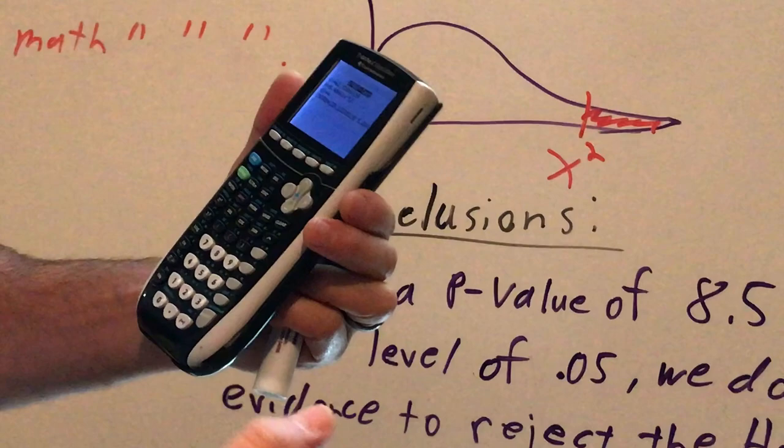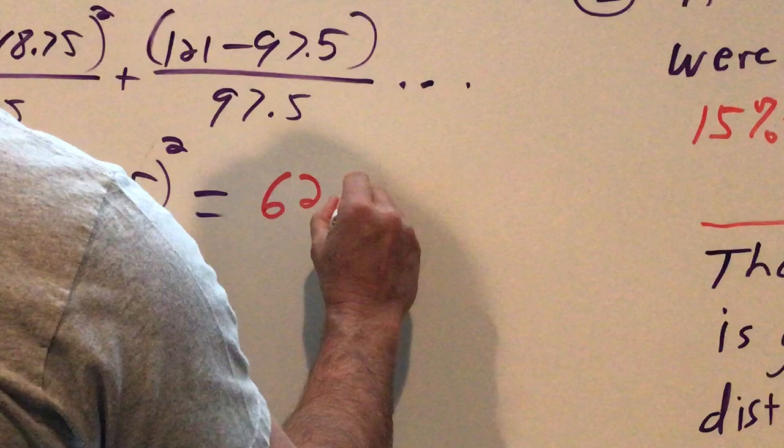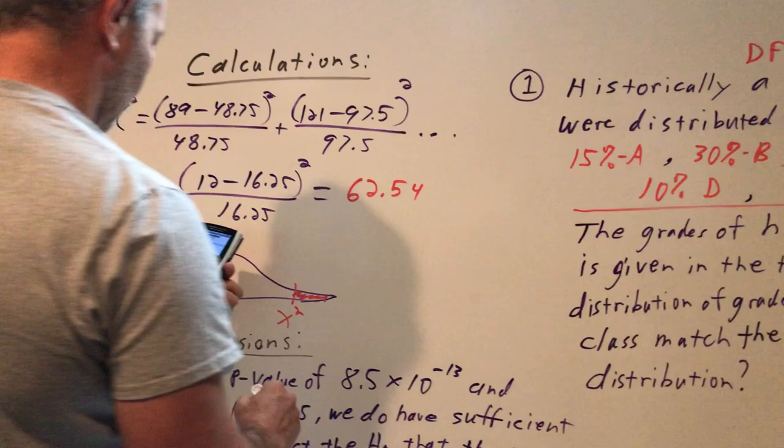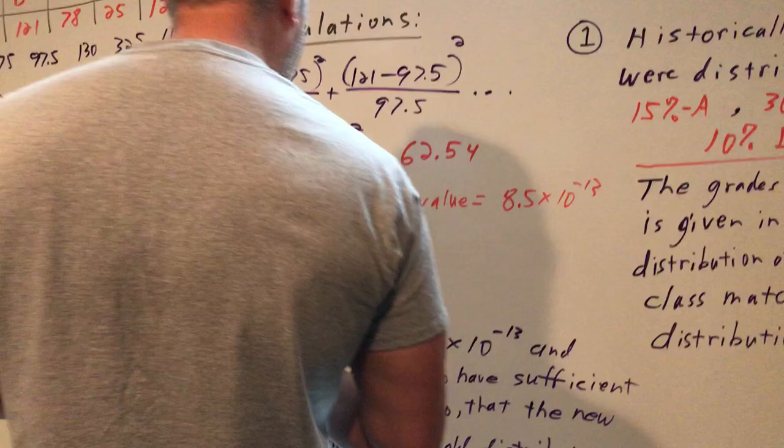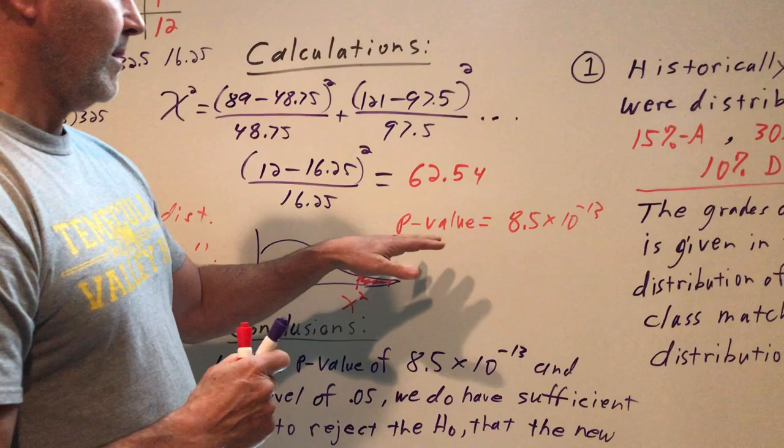My chi-squared value equals 62.54. And a p-value, 8.5 times 10 to the negative 13, which is very small. All right, that p-value again stands for the probability that we had any results we got if it was just by random chance.